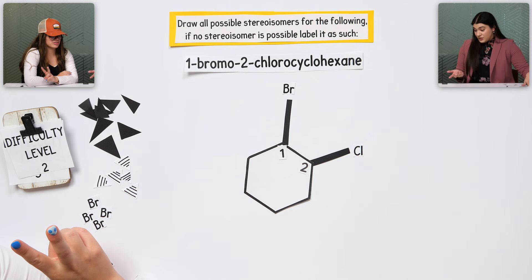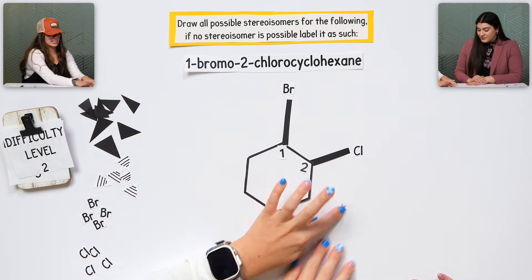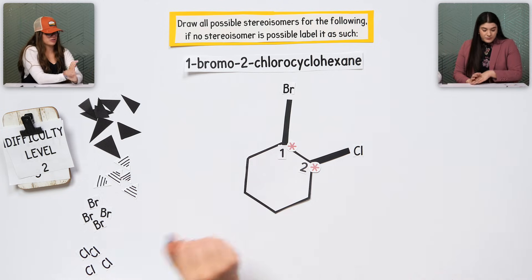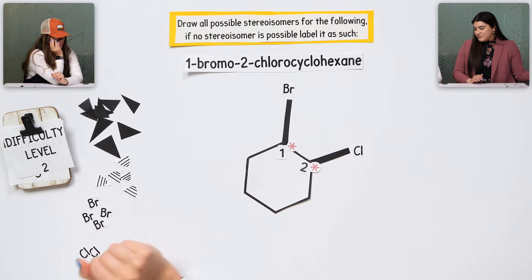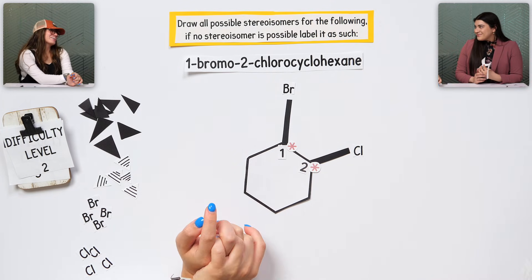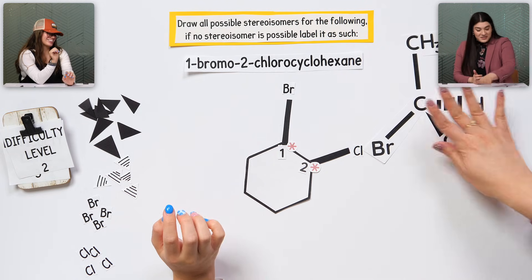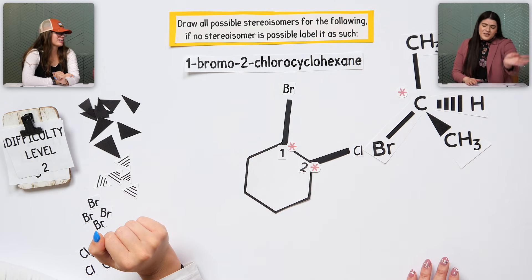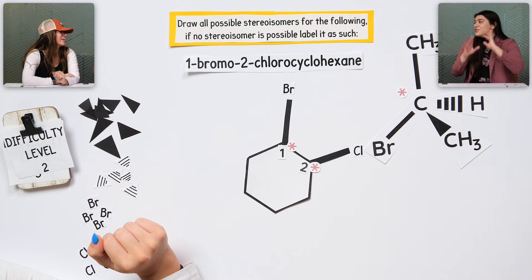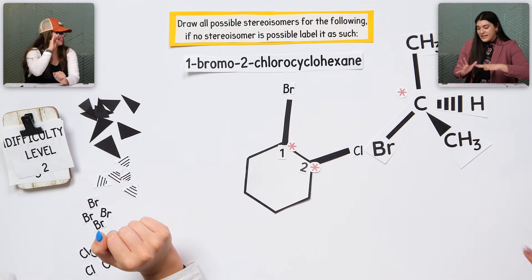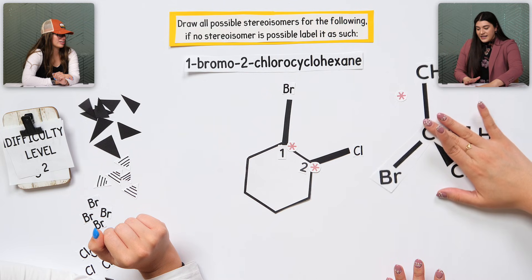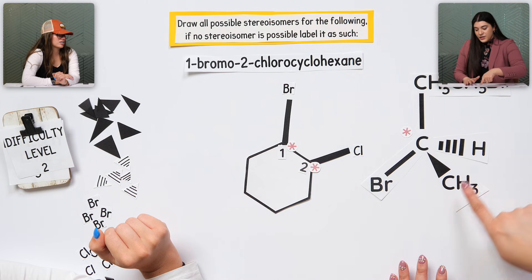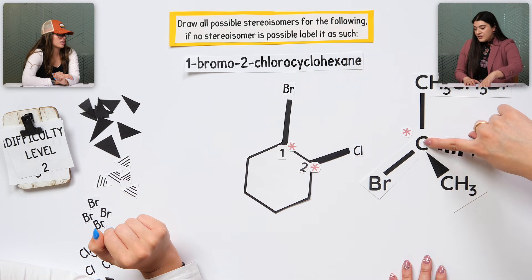So how many chiral centers do we have? Is it just two? Good. Where are they? I would say it's right where I labeled them. It's like that corner right there, and then that carbon right there. What's a chiral center? A chiral center is a carbon atom that has four different groups.